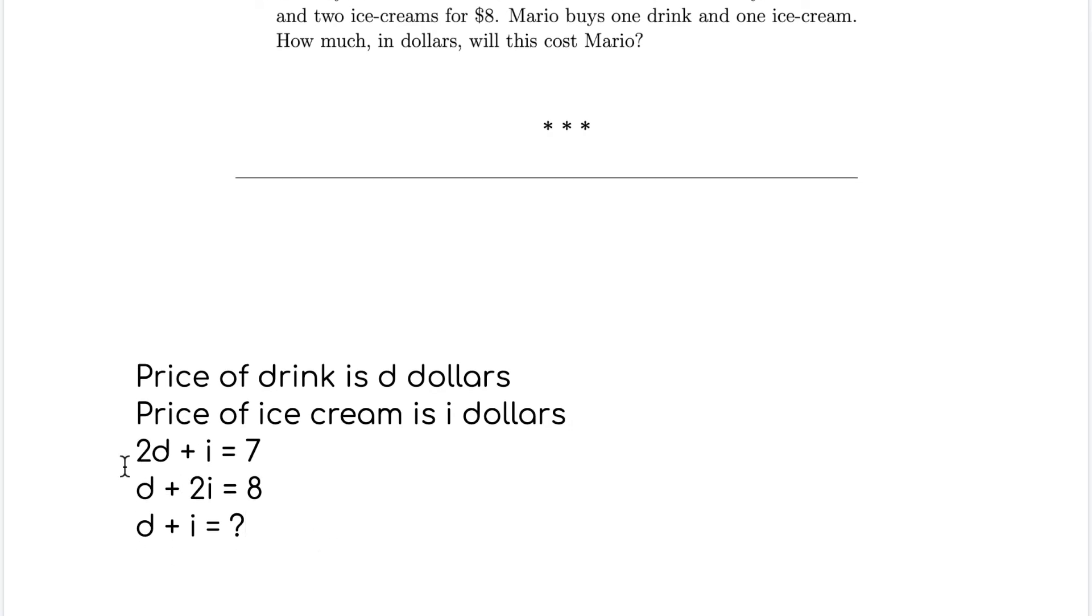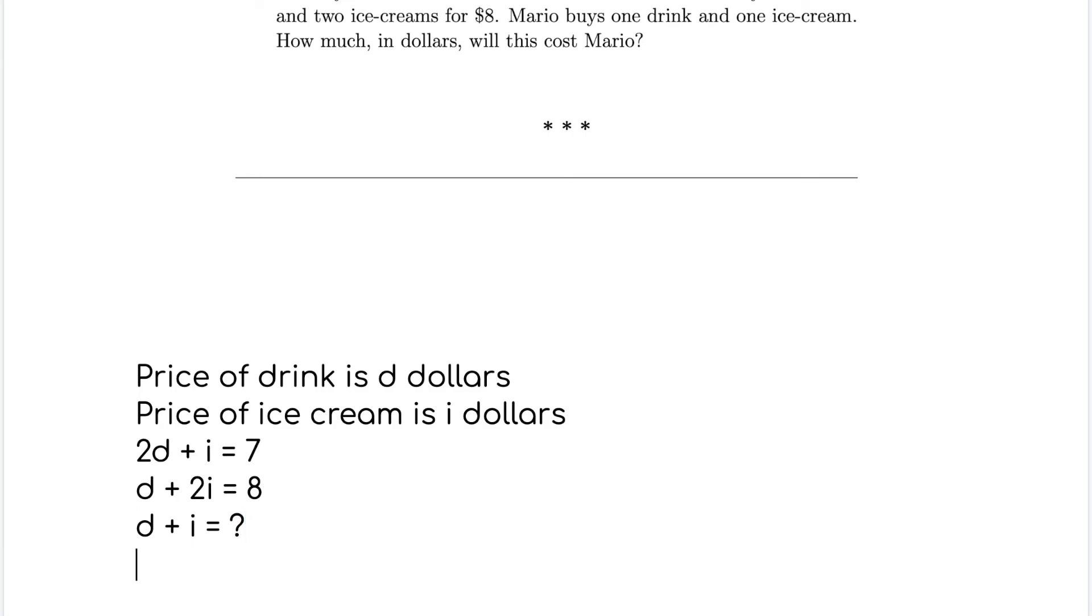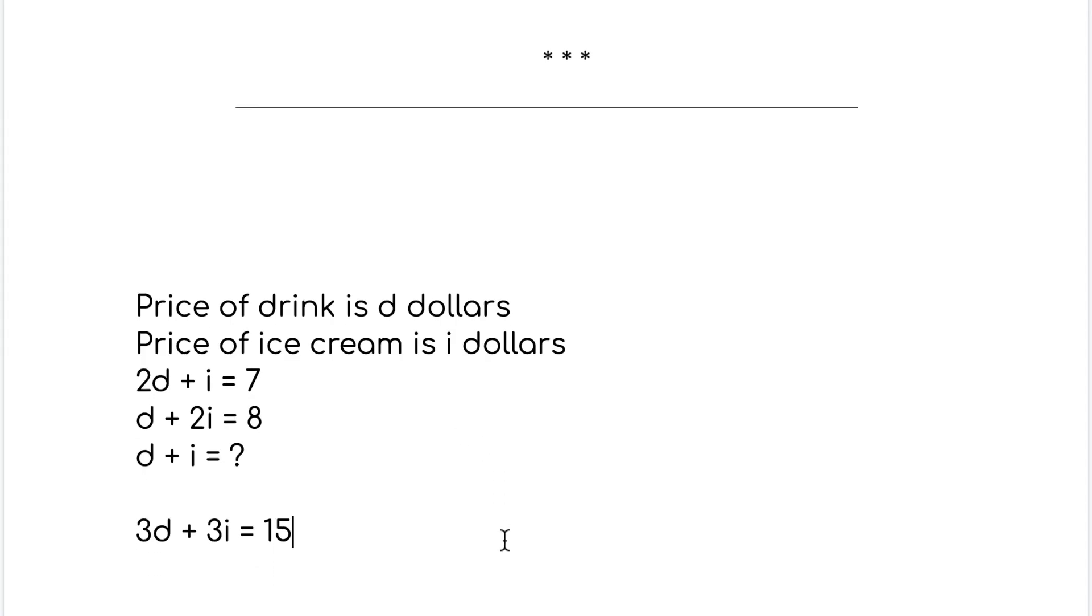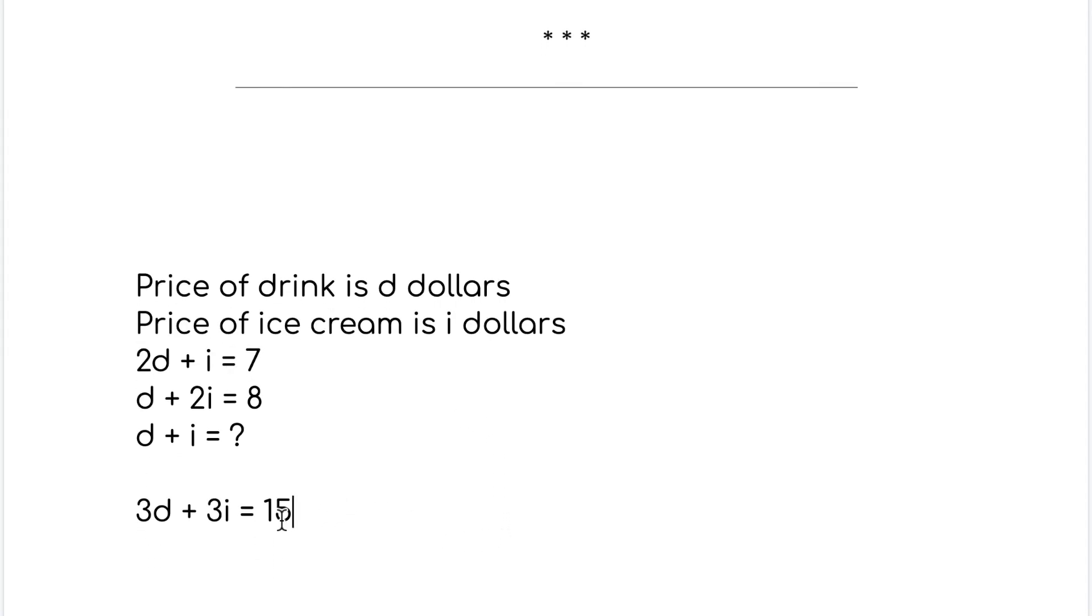I'm sorry that should be an 8 because Kim's price is 8. So what we do here is we can simply add up these two equations. If we add these two, it means we add the left side and the right side. 2D plus the D, that's going to be 3D. And then the I plus the 2I, that's going to be 3I. And then on the right hand side, that's going to be 7 plus 8 is 15.